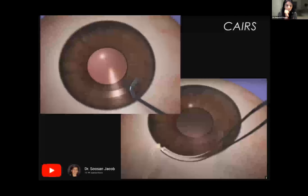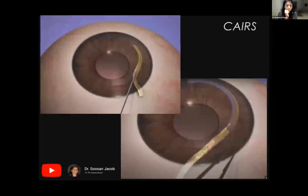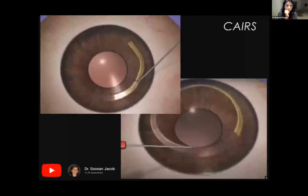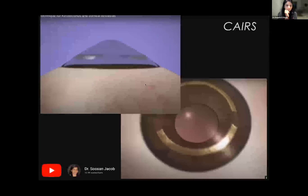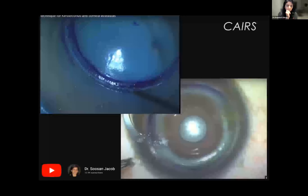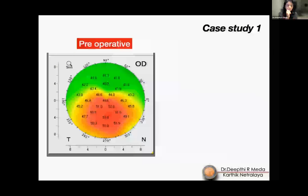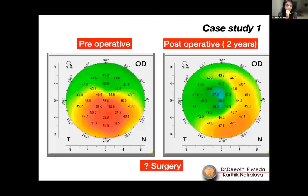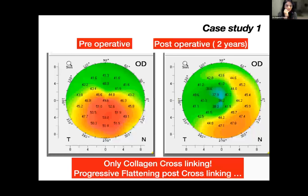Corneal allogenic intrastromal ring segments (CAIRS), introduced to the world by Dr. Susan Jacob, appear to be a promising modality. Various ways of inserting these segments have been described and they are considered good alternatives to artificial INTACS rings. An interesting question: what surgery produced these pre- and post-operative topography images? The answer is straight corneal collagen cross-linking.